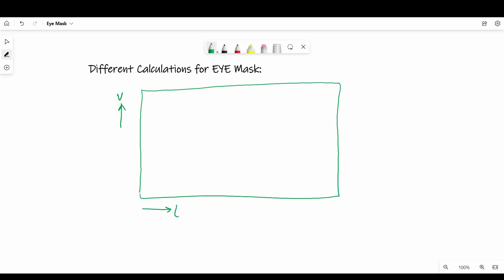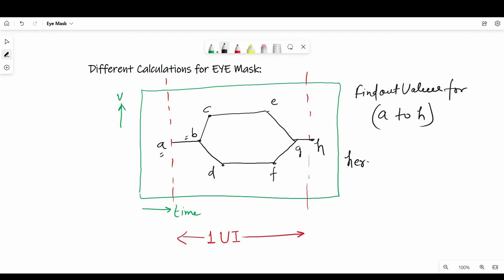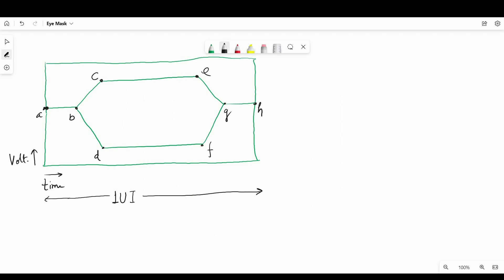Now let's talk about different information or calculations we need to do to create eye mask. As you can see in the image, we need to find out these values from A to H to create an eye mask. And the very first condition is this complete eye mask should be within one UI or one unit interval. So in case of single ended signals or in case of SDR, it should be equal to one clock period. But in case of DDR, it should be either equal to one data period or one strobe period.